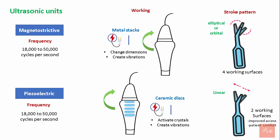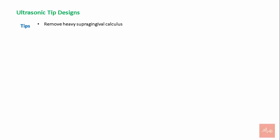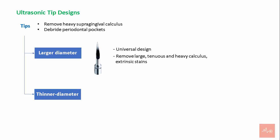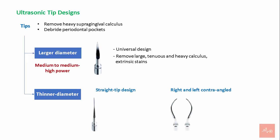Ultrasonic tips are designed to remove heavy supragingival calculus and debride periodontal pockets. They are grouped as large and thin diameter tips. Large diameter tips have a universal design and are used to remove large, tenacious, and heavy calculus; medium to medium-high power settings are recommended. Integrated thin diameter tips can have a straight tip design or right and left contra-angle tips.